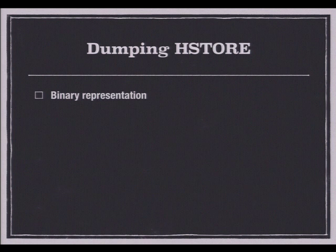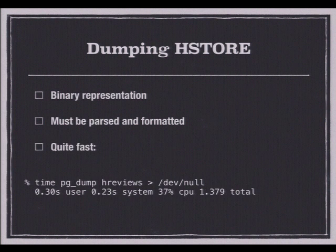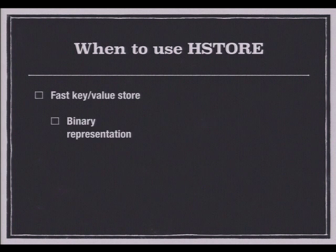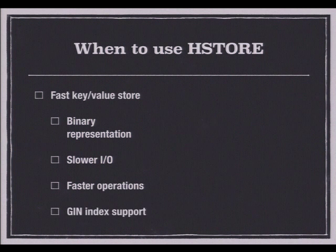Let's talk about dumping HStore. HStore has its own internal binary representation, so it must be parsed and formatted as text to dump from the database — the inverse of the XML problem. However, it's quite fast — it took about 300 milliseconds to dump. So when should you use HStore? It's a very nice, fast key-value store with binary representation making individual value lookups much more efficient. I/O is a bit slower to load and unload, but operations once data is loaded are much faster, and with GIN and expression index support, even better.